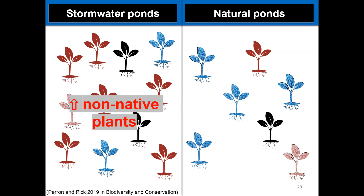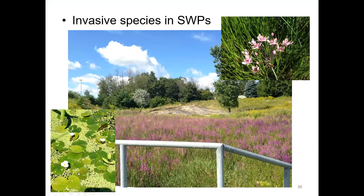Some of the problematic invasive plant species found at stormwater ponds were European frog-bit — also found in many natural wetlands, suggesting strong dispersal ability — purple loosestrife, which was found in almost every single stormwater pond, and flowering rush. These are important invasive species to recognize, as they are non-native and problematic for wetland ecosystems.